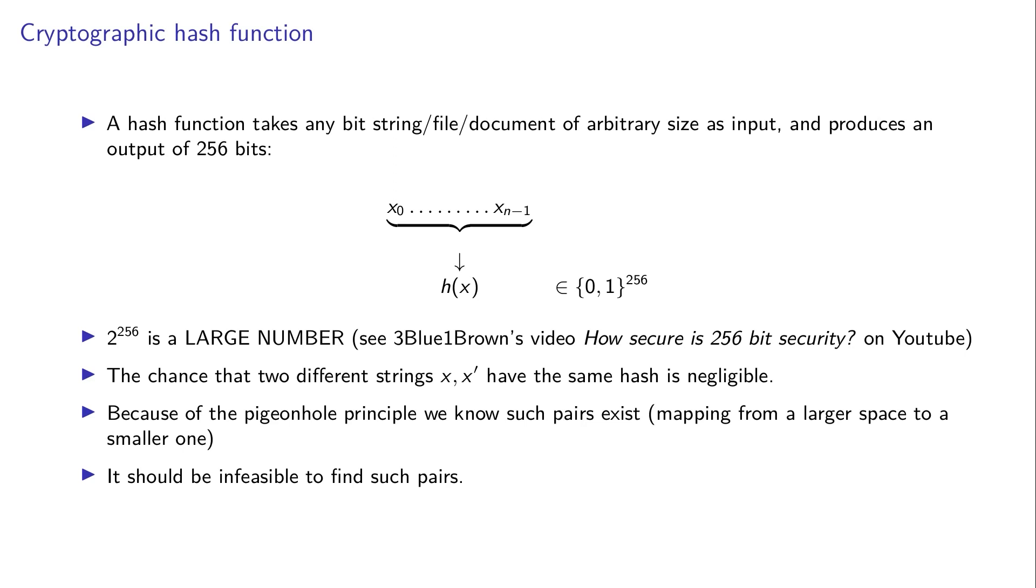But we know these strings must exist, because we are mapping from a larger space. The input string potentially can be of arbitrary size and we are mapping from a larger space into the smaller space of 2 to the 256. It's smaller but still it's large but it's finite. So we know by the pigeonhole principle that there must be two different strings which have the same hash value, but it should be infeasible to find such pairs. And this is truly important.